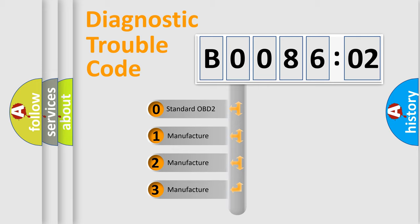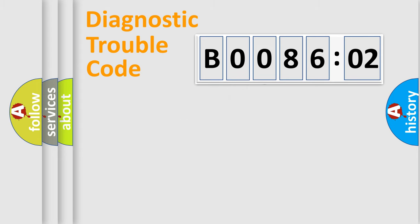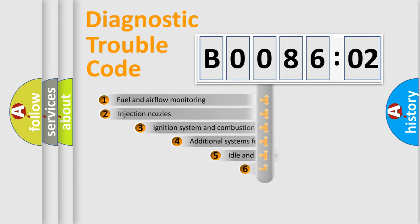If the second character is expressed as zero, it is a standardized error. In the case of numbers 1, 2, 3, it is a manufacturer-specific expression of the car-specific error.